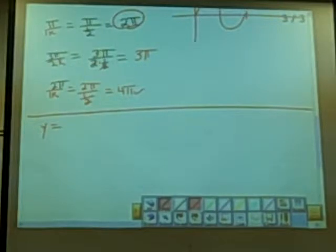This is y equals cosine 10π x. Is there going to be any shifting up or down? No, there is not.